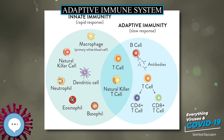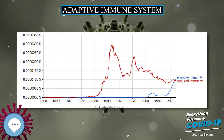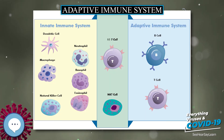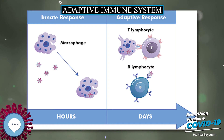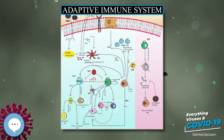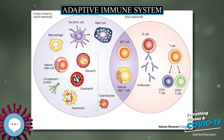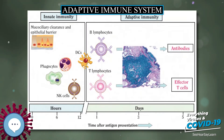CD4+ lymphocytes, also called helper T cells, are immune response mediators and play an important role in establishing and maximizing the capabilities of the acquired immune response. These cells have no cytotoxic or phagocytic activity and cannot kill infected cells or clear pathogens, but manage the immune response by directing other cells to perform these tasks. Helper T cells express T cell receptors (TCR) that recognize antigen bound to class II MHC molecules. The activation of a naïve helper T cell causes it to release cytokines, which influence the activity of many cell types including the APC that activated it. Helper T cells require a much milder activation stimulus than cytotoxic T cells, and can provide extra signals that help activate cytotoxic cells.